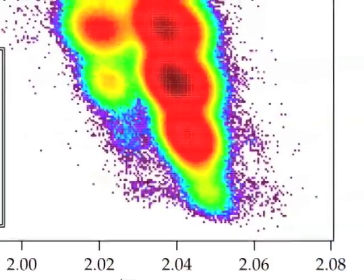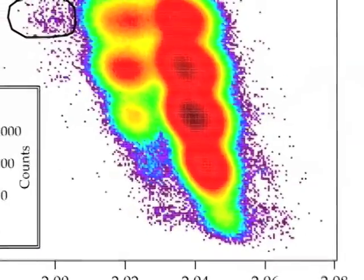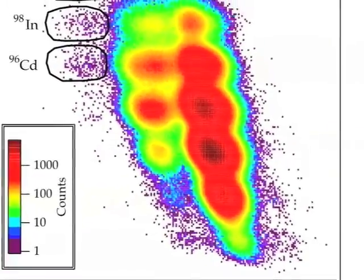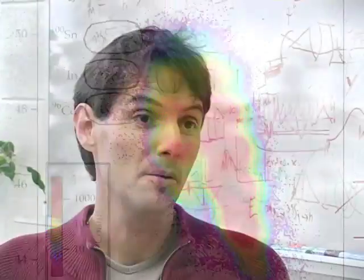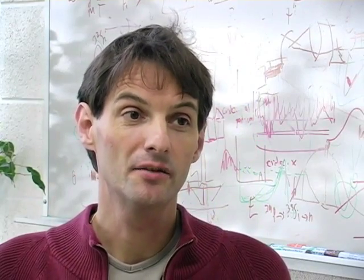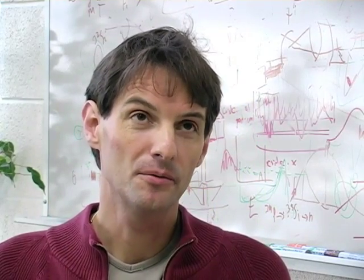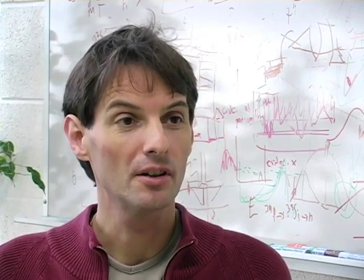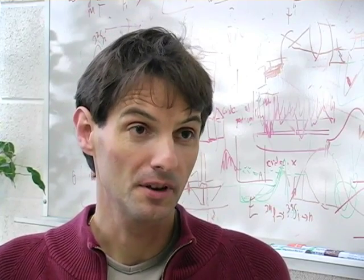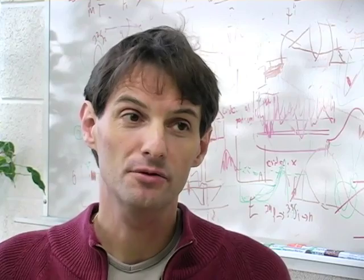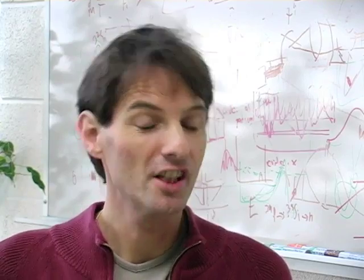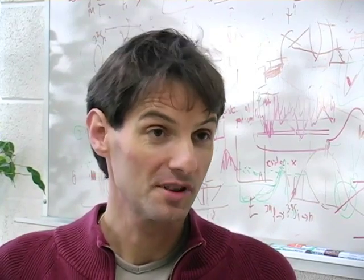Okay, so the fact that Tin 100 is very close to the drip line and still should have the properties of a magic nucleus is very interesting because from all the studies that we do on radioactive isotopes, shows that this shell structure actually changes as you go away from stability.